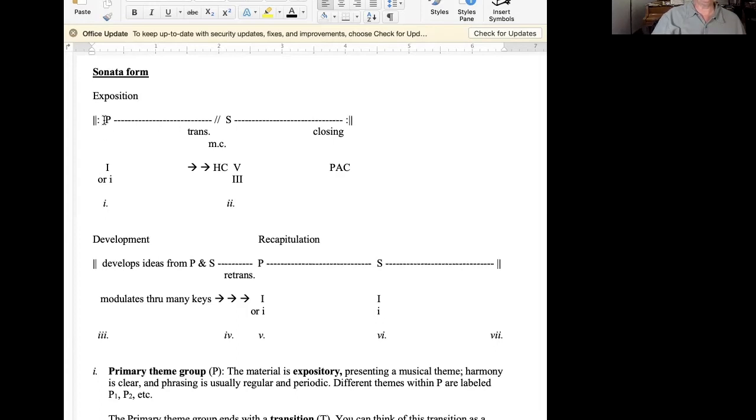So in the exposition, as you're trying to sort out where the primary theme ends and where the secondary theme begins, the first thing that you should listen for is that medial caesura. Just a word about these four sections, which are going to be abbreviated P, T, S, and C. As I said, the primary theme group and the secondary theme group are expository. Their main function is to expose or introduce you to motives and themes in the sonata.